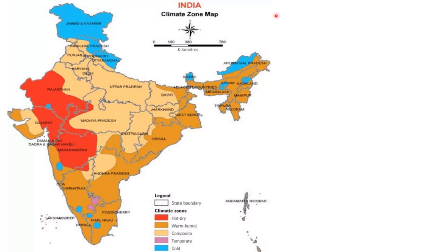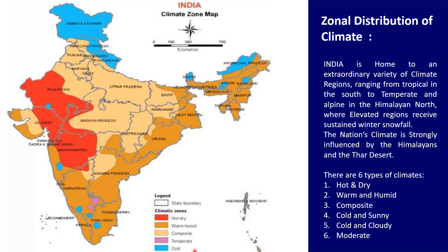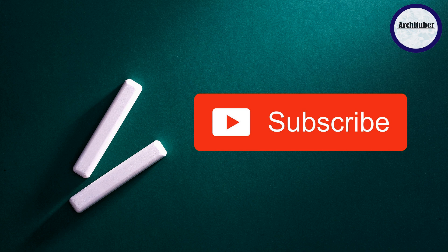Now discussing about the climatic zones of India. There are several climatic zones: hot and dry, warm and humid, composite, temperate and cold. India is home to an extraordinary variety of climate regions ranging from the tropical in the south to temperate and alpine in the Himalayan north, where elevated regions receive sustained winter snowfall. The nation's climate is strongly influenced by the Himalayas and the Thar Desert. We are going to discuss all six climates in the next video, so please stay tuned. With that, we have completed part 1 of climatology.